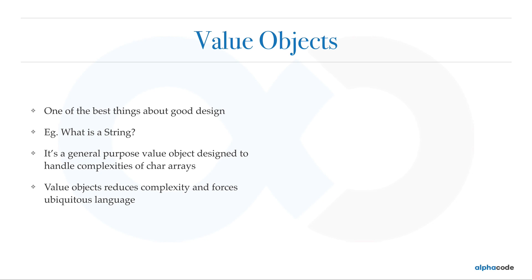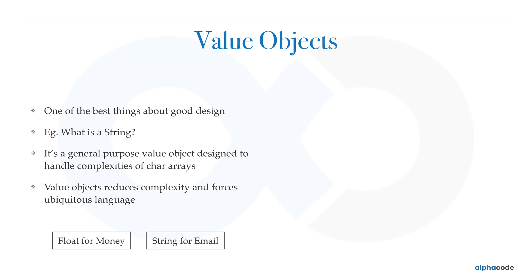Value objects are values that exist in your system, and those values generally come from your ubiquitous language. You might be using float for money, strings for email, or primitives for things like registration numbers, phone numbers, speed, colors, names, addresses, or car models. But that is completely wrong — you should be using value objects instead of primitives. In fact, some coding experts say you should not use primitives in your objects at all.